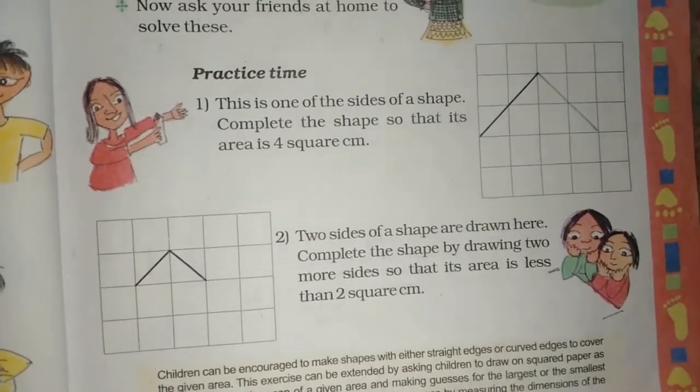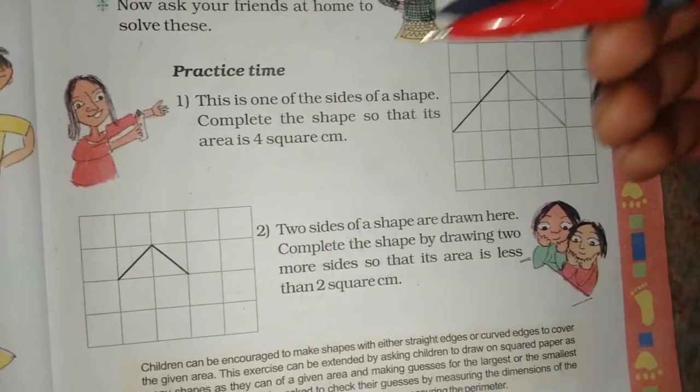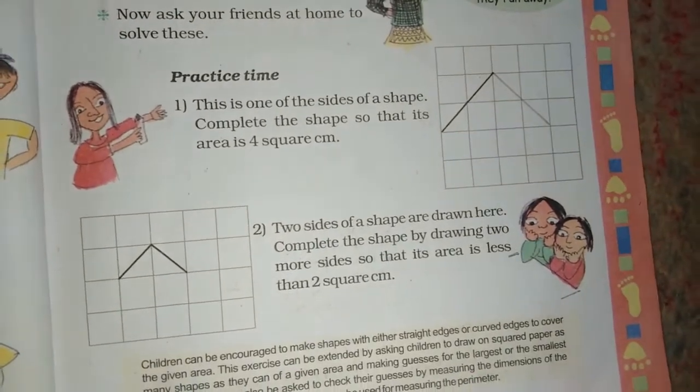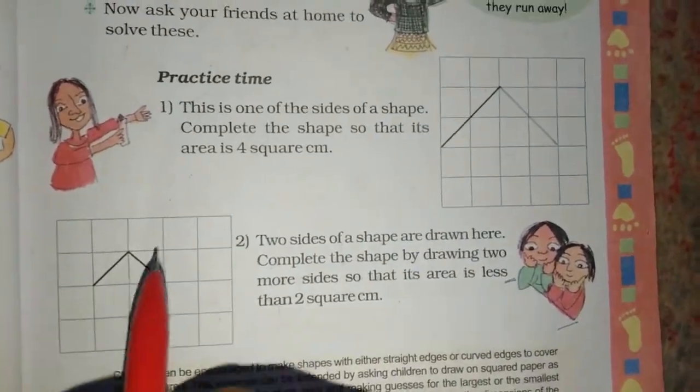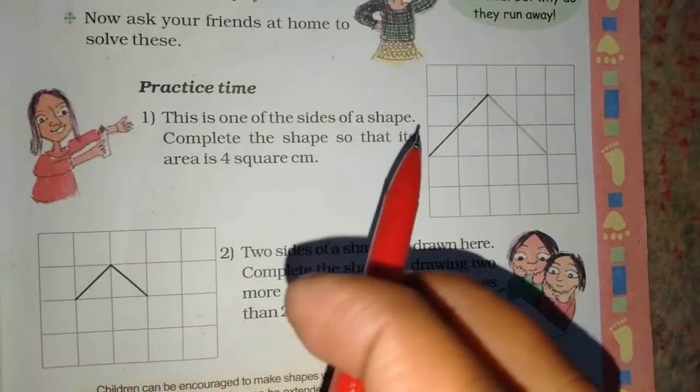Hi kids, what is the exercise? This is one of the sides of a shape. Complete the shape so that its area is 4 square cm.